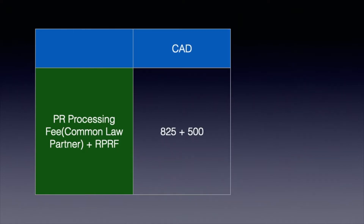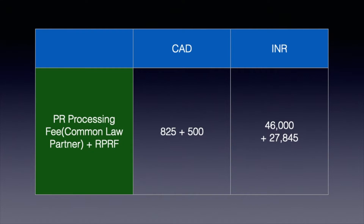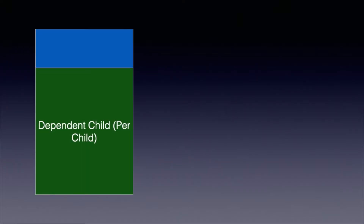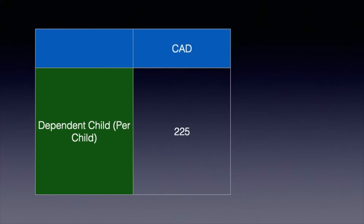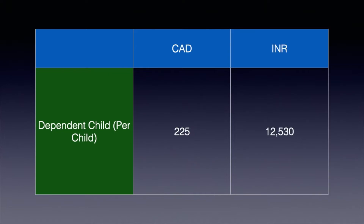If you are applying for PR along with your partner, you will have to pay an additional 825 Canadian dollars for their PR processing fee, plus 500 Canadian dollars RPRF for your partner as well — a total of 1,325 Canadian dollars, equivalent to 73,845 Indian rupees. Also, if you have kids under 22 years old, you will need to pay a PR fee for them as well, which is 225 Canadian dollars, equivalent to 12,530 Indian rupees.